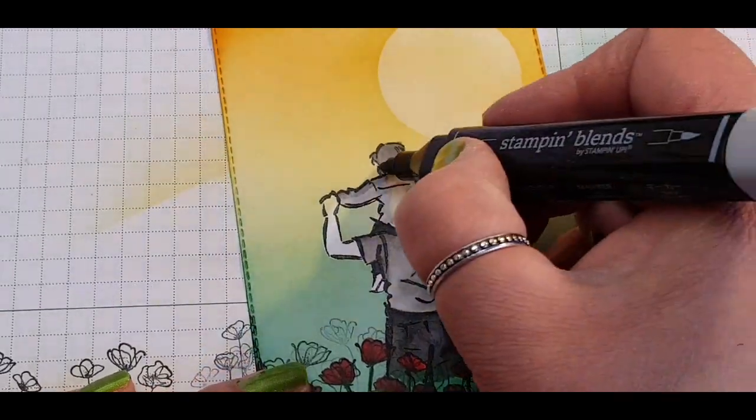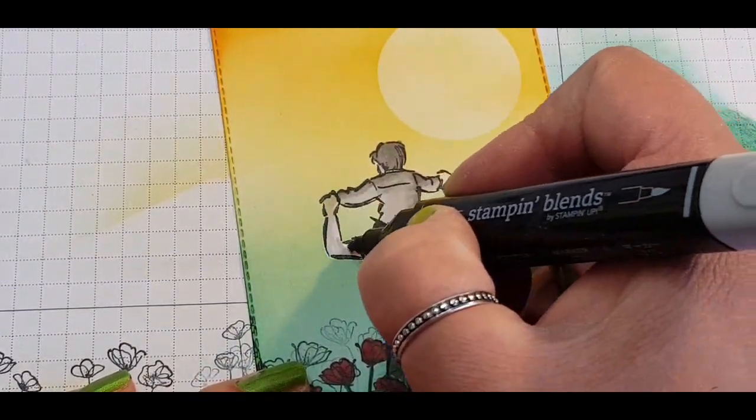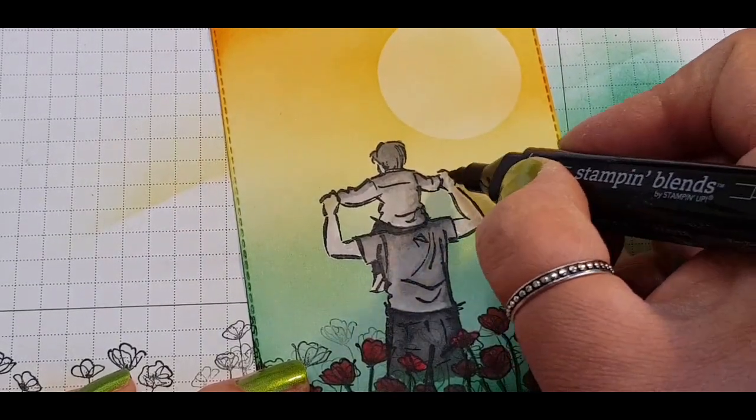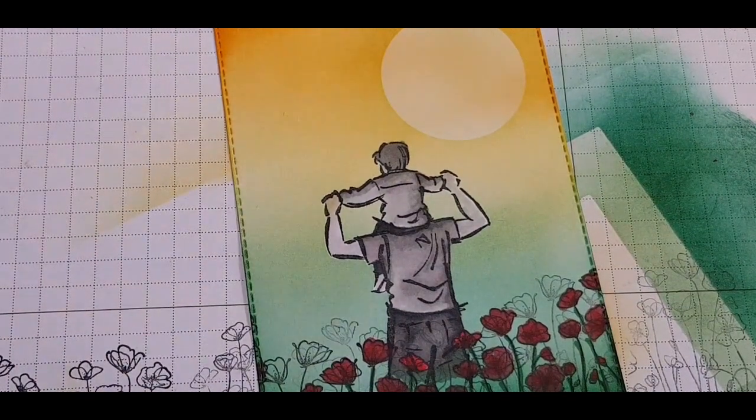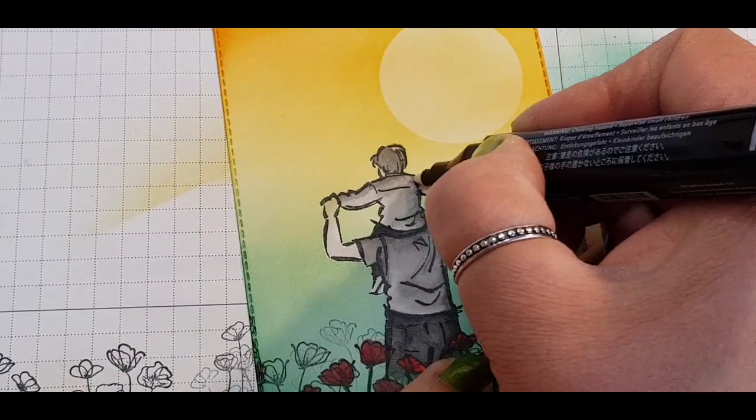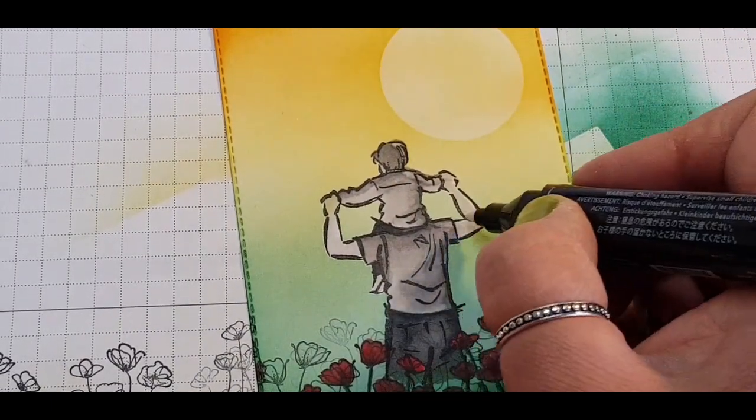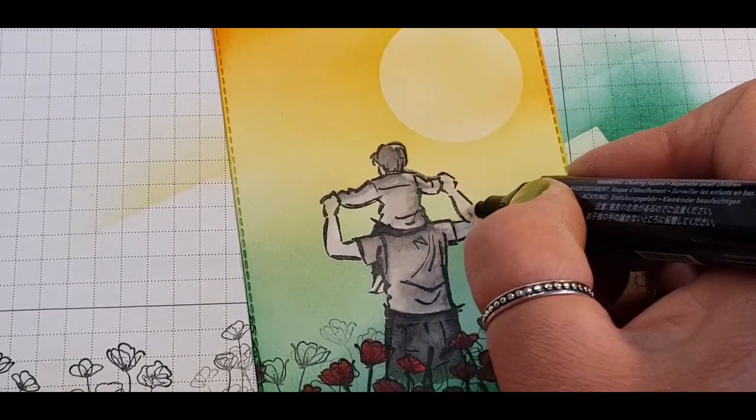Just blending those colors in and even using the grey for their skin tone as well. Like I said I wanted the whole image to be a black and white look rather than having skin tones. Then I'm coming in with my color lifter and I'm just trying to create some highlights on that right side where the sun might hit and just moving that color of the blend.